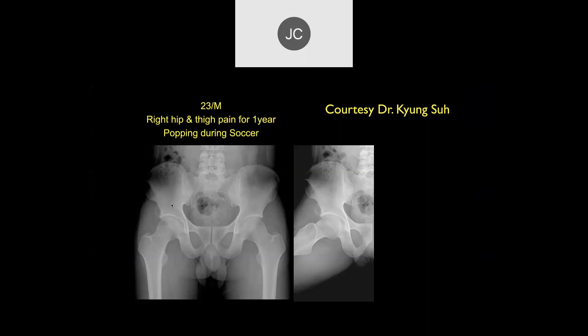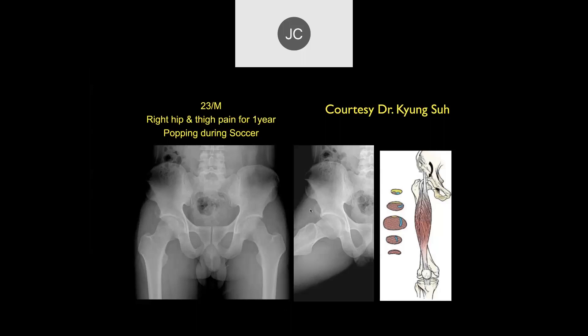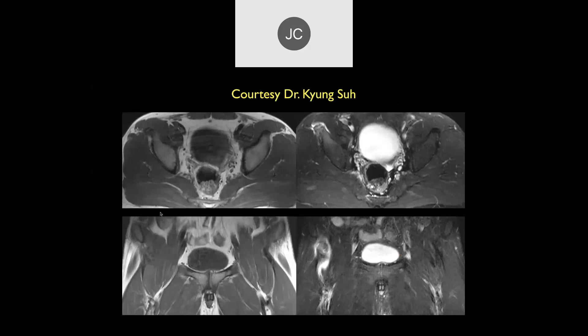There's an avulsion fracture at the anterior inferior iliac spine on the right side. That's the rectus femoris — here's the indirect and direct heads. The direct head goes to the inferior pubic ramus. This is an avulsion fracture at that insertion. On MR, we can see the avulsion injury of the anterior inferior iliac spine with a lot of edema around it.